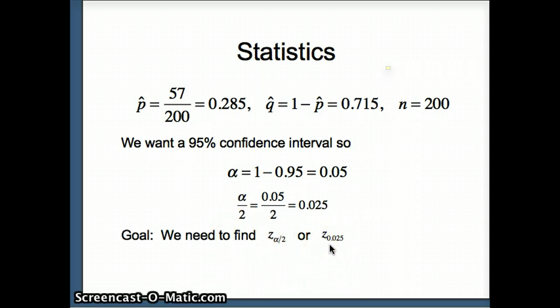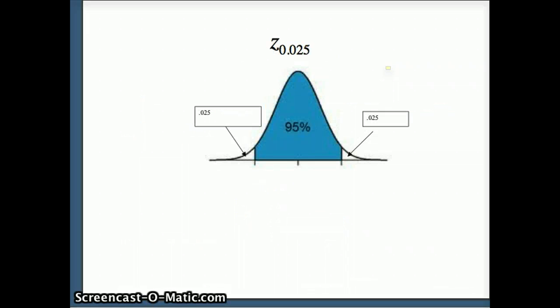So here's our picture: we have a z distribution, 95 percent in the middle, 0.025 in the left tail, 0.025 in the right tail. We want to find the z-scores that correspond to this. We'll ask Minitab to help us with that. So if we say inverse CDF 0.025 normal zero one—of course the standard normal has a mean of zero and a standard deviation of one—that will give me the z-score that lands in this position.